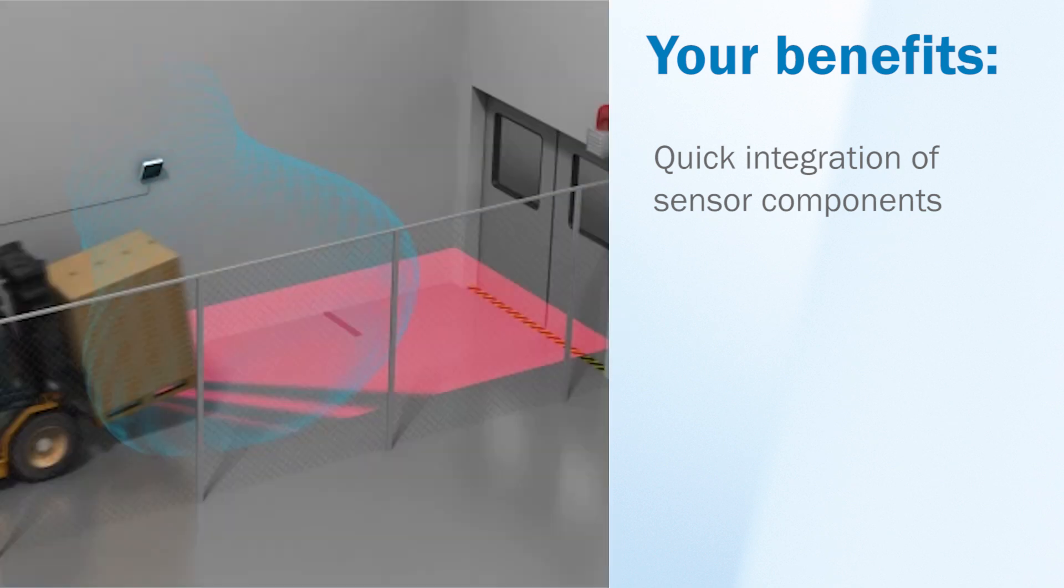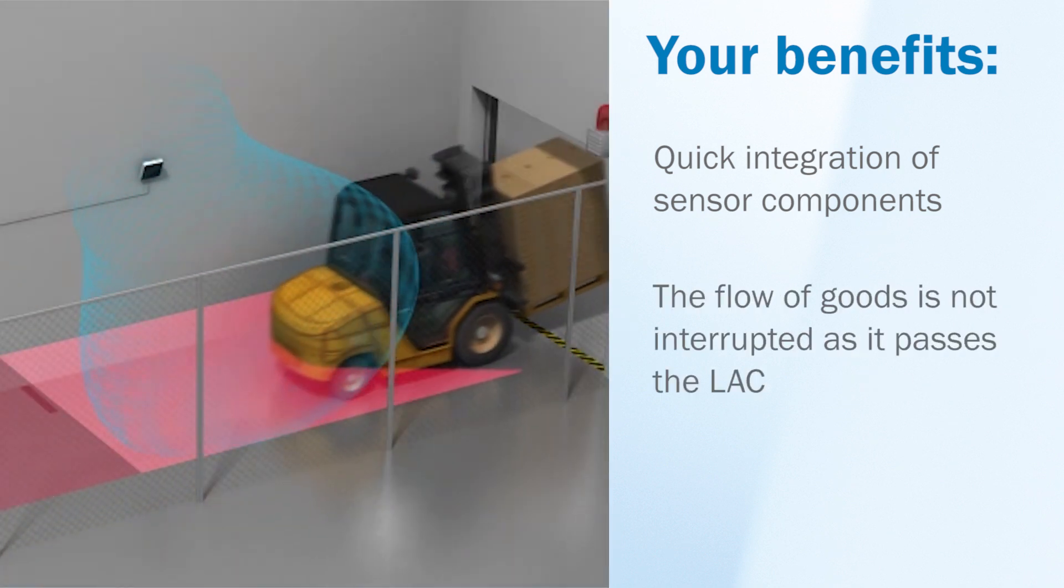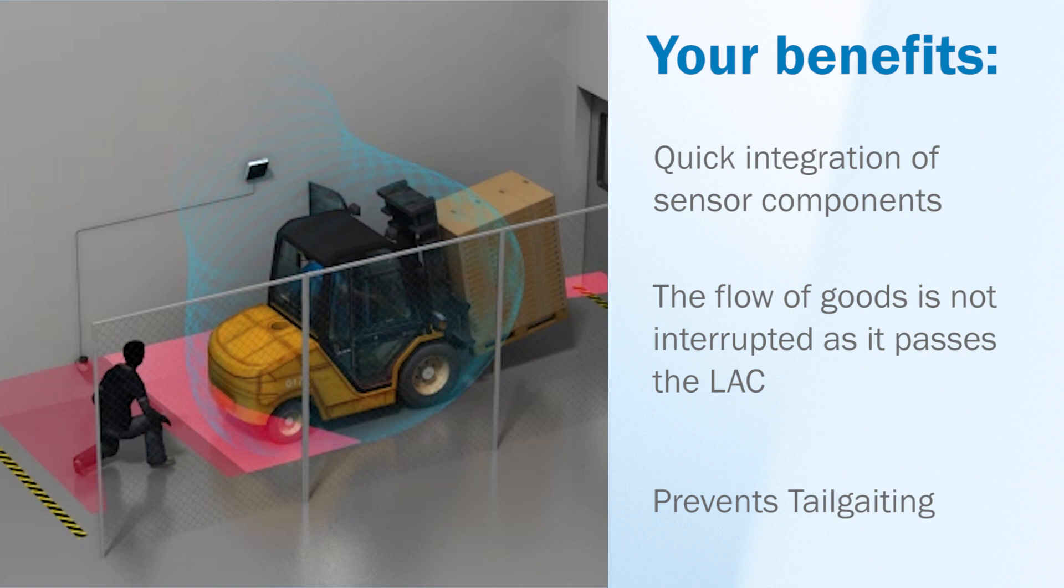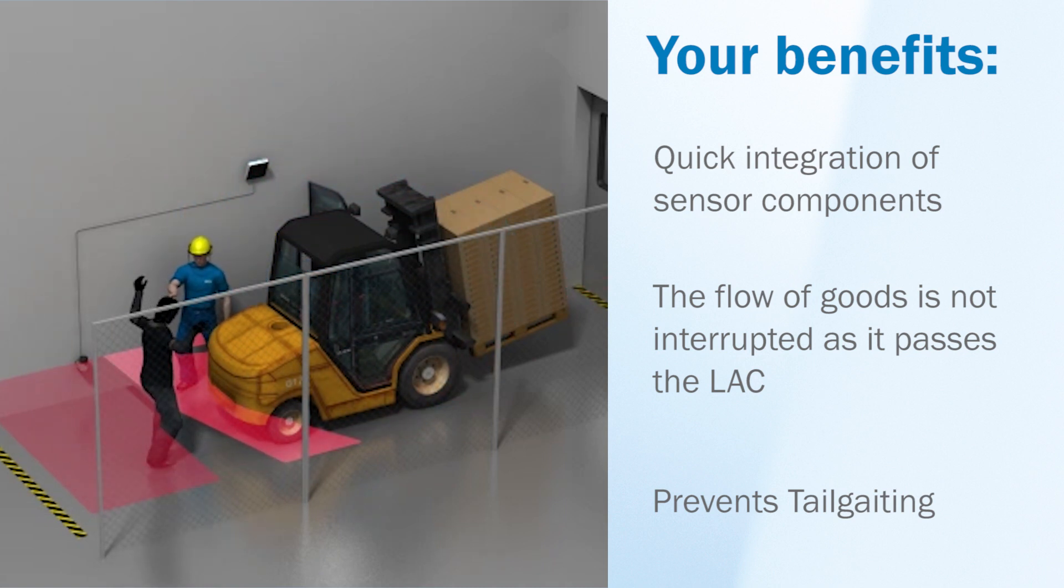The system maintains uninterrupted flow without requiring processors to stop or identify themselves. It prevents tailgating and ensures only authorized persons can pass the access control point.